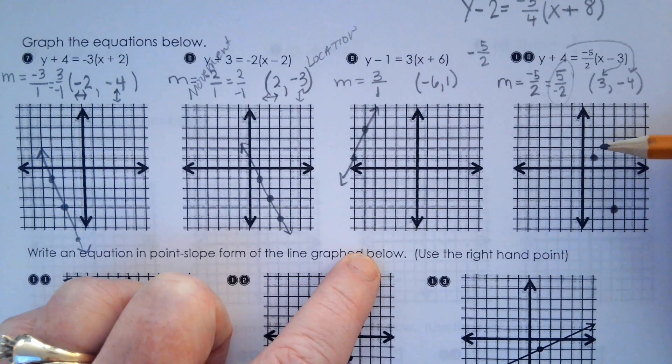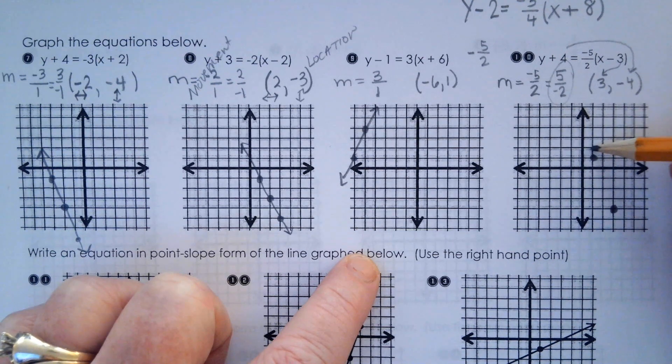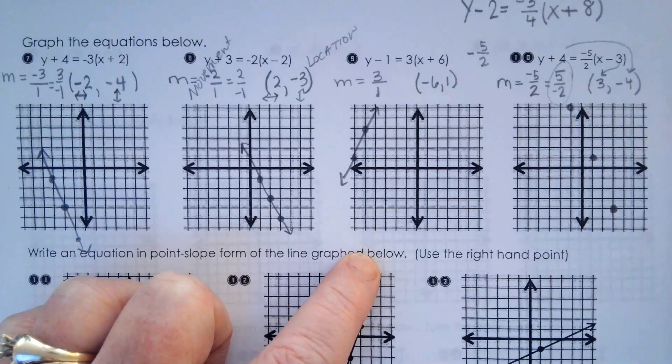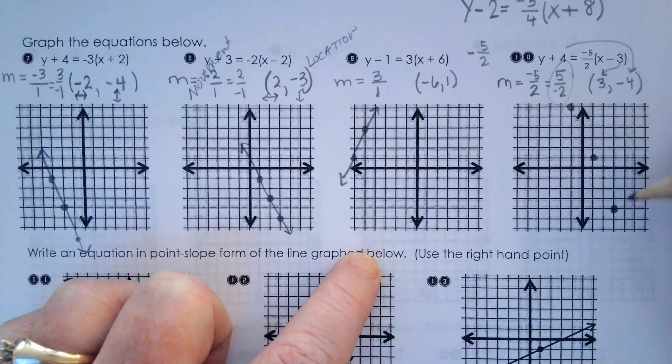Is that right? That's right. Up 5, back 2. Do we get a straight line?